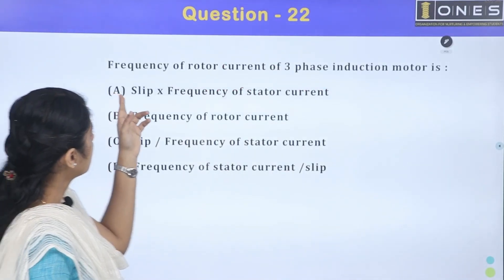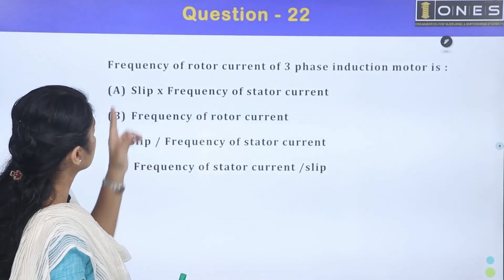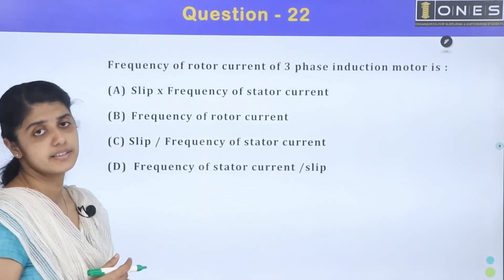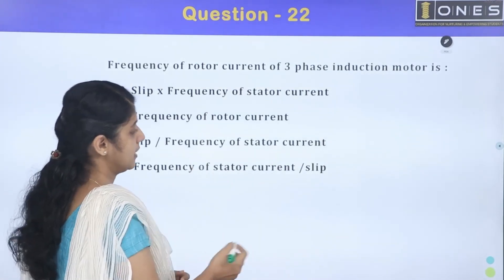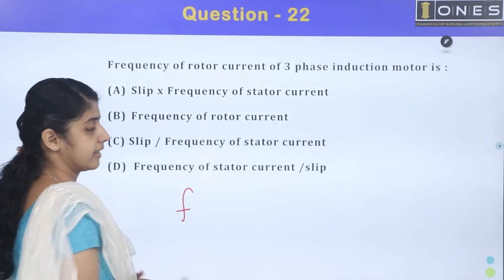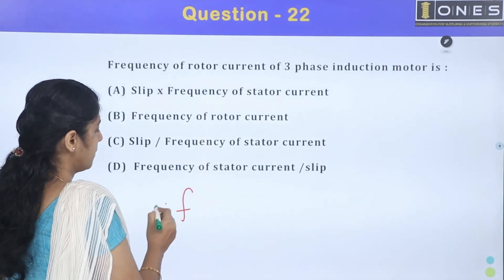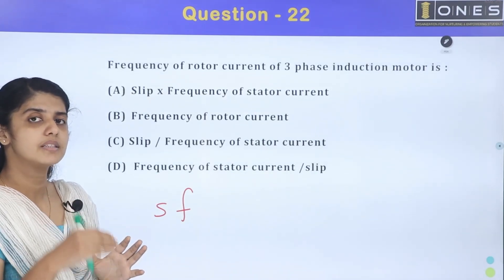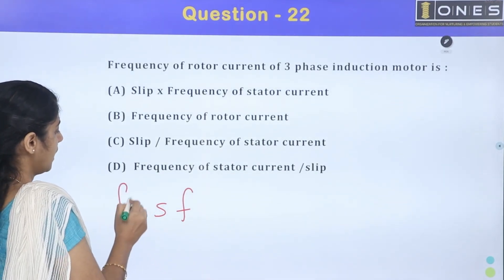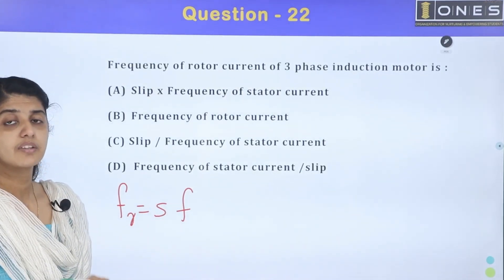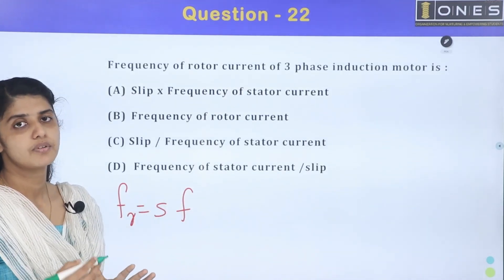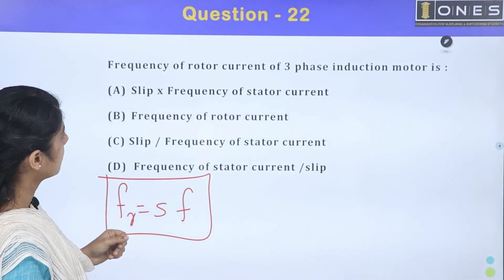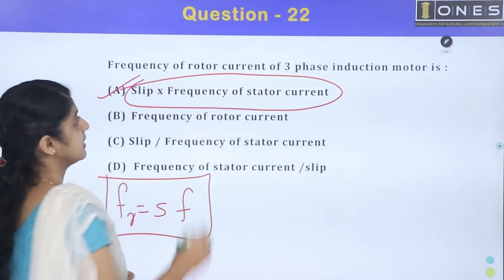The next question is: the frequency of rotor current of a 3-phase induction motor. The supply frequency is F, and slip is S. The rotor frequency, or rotor current frequency, is represented as Fr = S × F, which is slip into frequency of the stator supply. The answer is slip into frequency of stator.